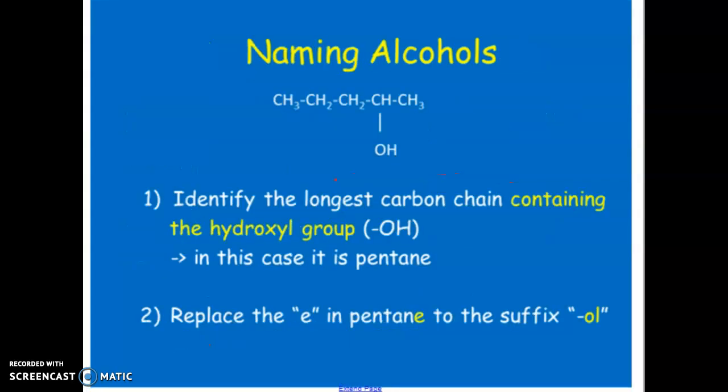Now let's go through some naming rules. Typically when you're deciding on your parent group, your parent group should be the longest continuous hydrocarbon chain that contains the OH group as a branch.